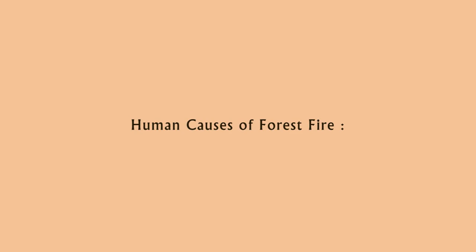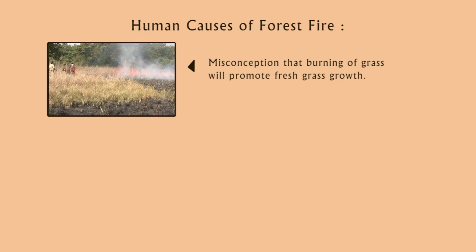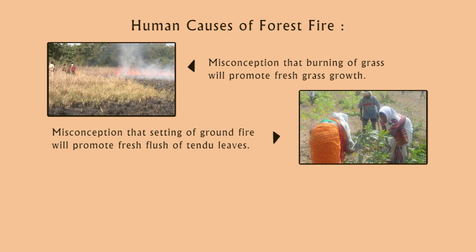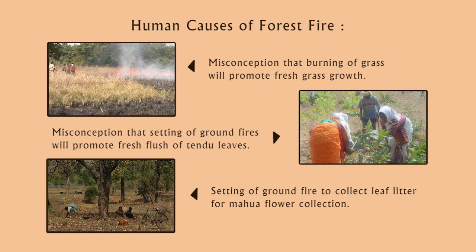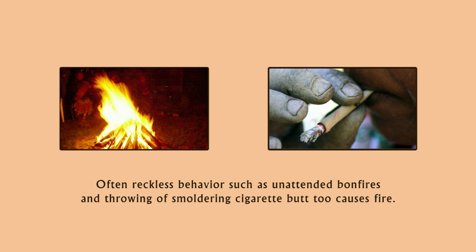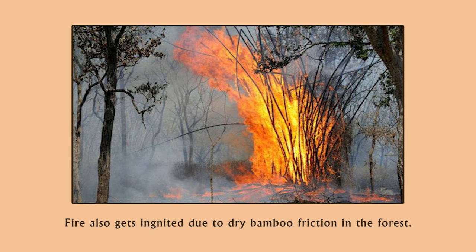Human causes of forest fire include: the misconception that burning of grass will promote fresh grass growth; the misconception that setting a ground fire will promote fresh flush of tendu leaves; setting of ground fire to clear leaf litter from mahua flower collection. Often, reckless behavior such as unattended bonfires and throwing of smoldering cigarette butts also causes fire. Fire also gets ignited due to dry bamboo friction in the forest.